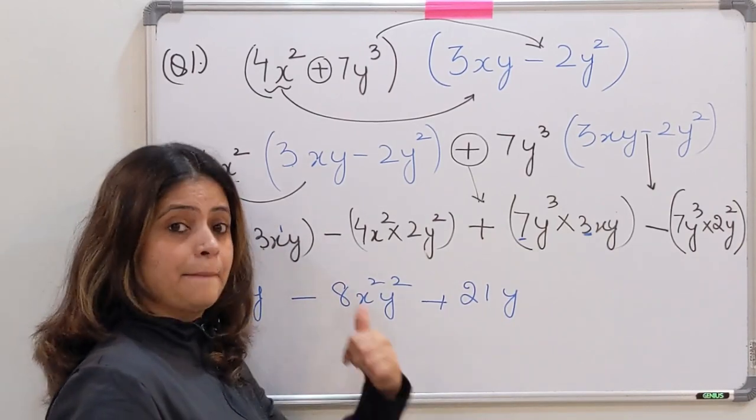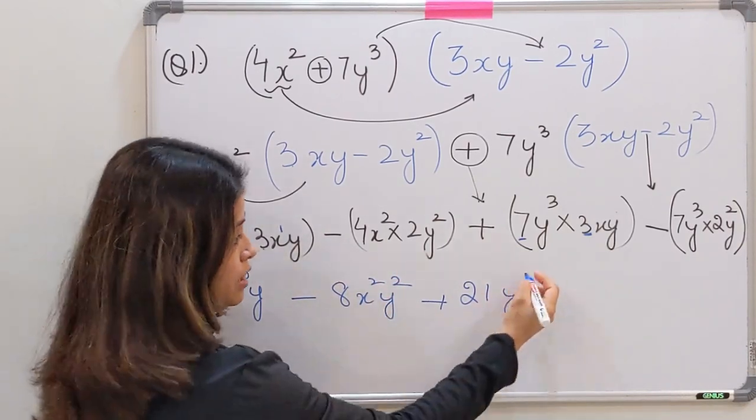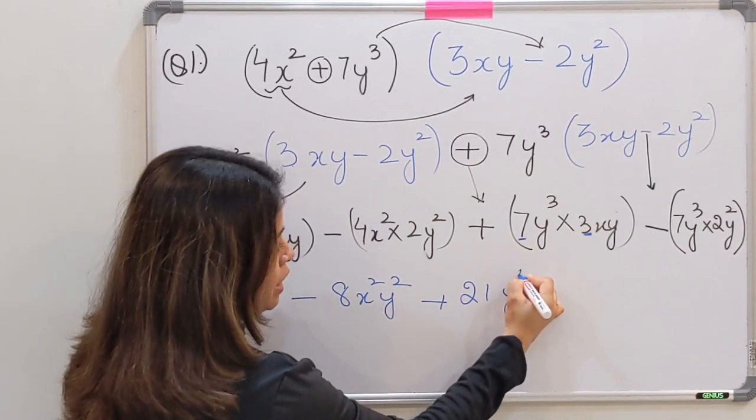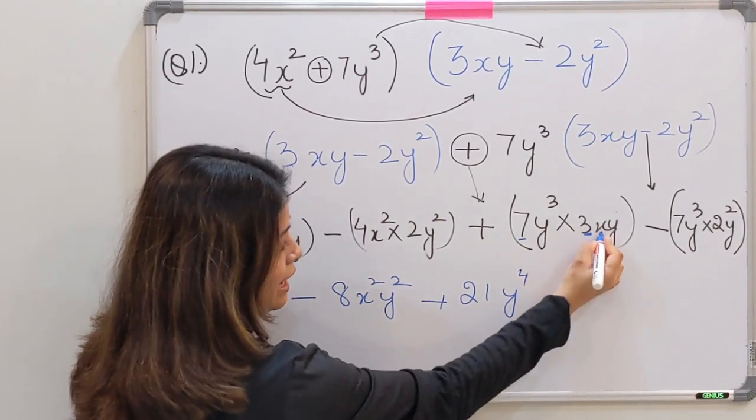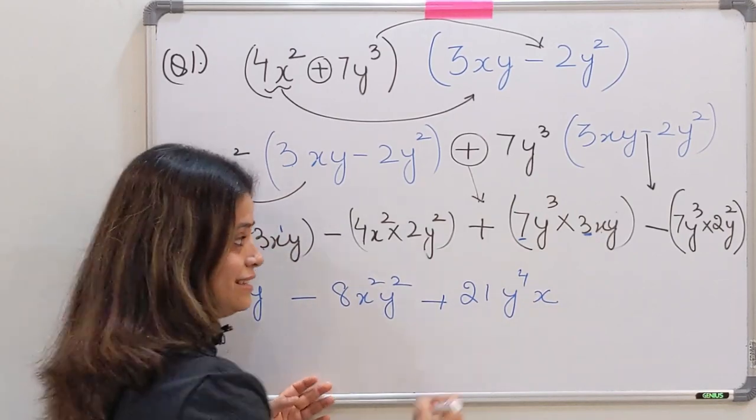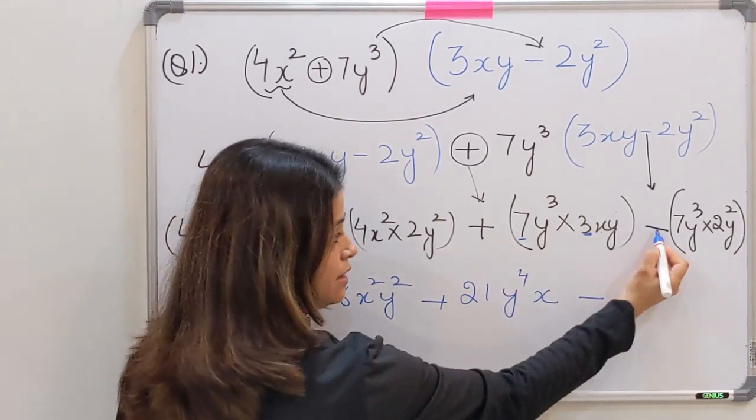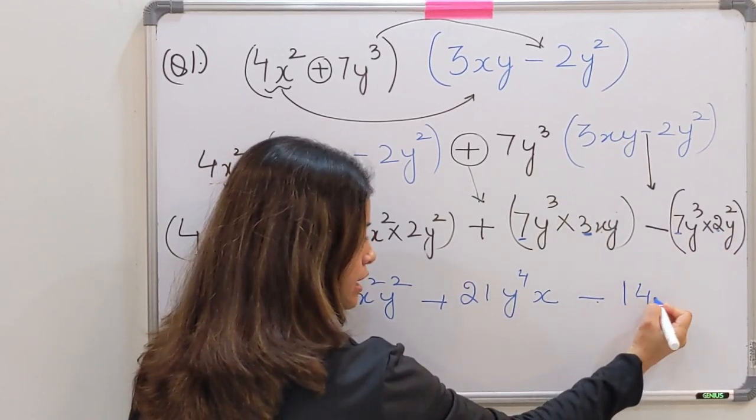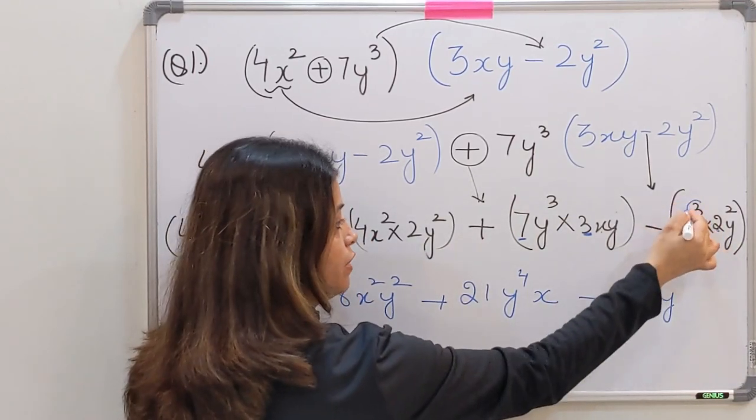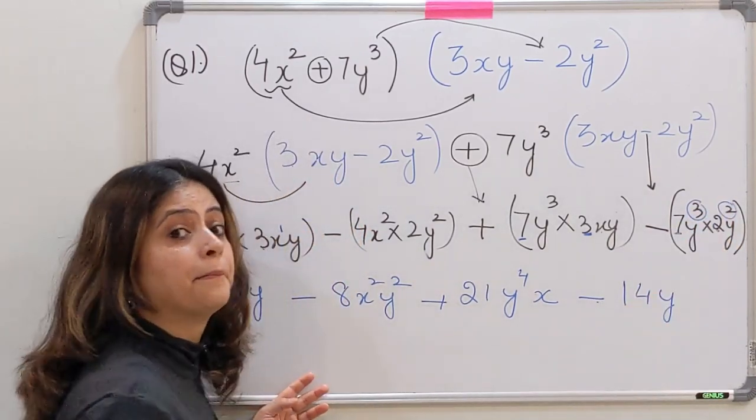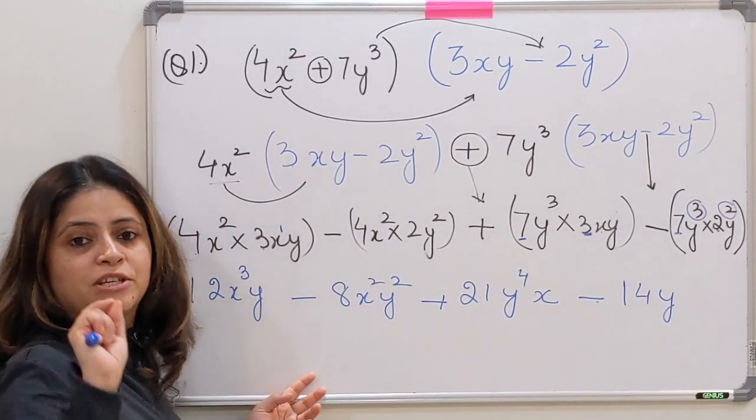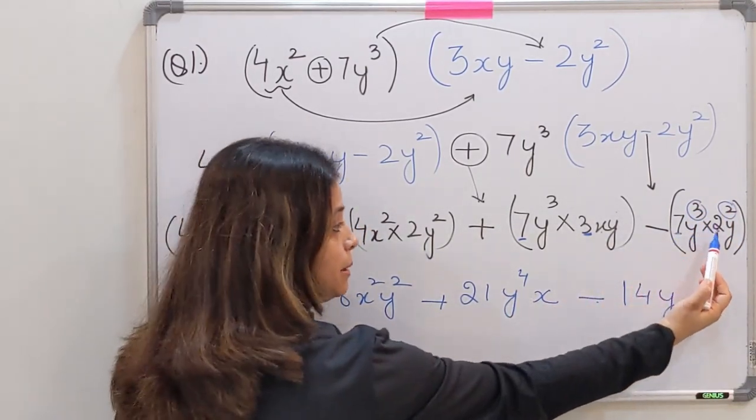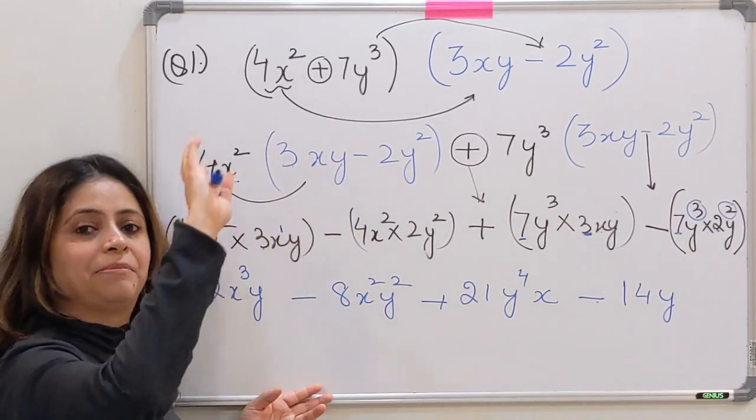That law we are using here: y to the power 4 and x. X ki saath kuch aur nahi hai so x will come as it is. Next minus, this minus. Y to the power, 7 twos are 14 and y to the power 3 and 2 ko kya karenge? Plus karenge. Many students make this mistake: you multiply niche ho raha hai na so the power should be multiplied. 3 times 2 is 6, that would be wrong.